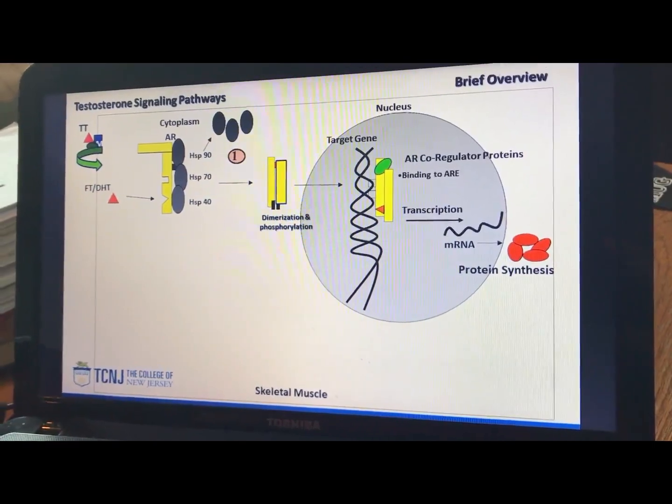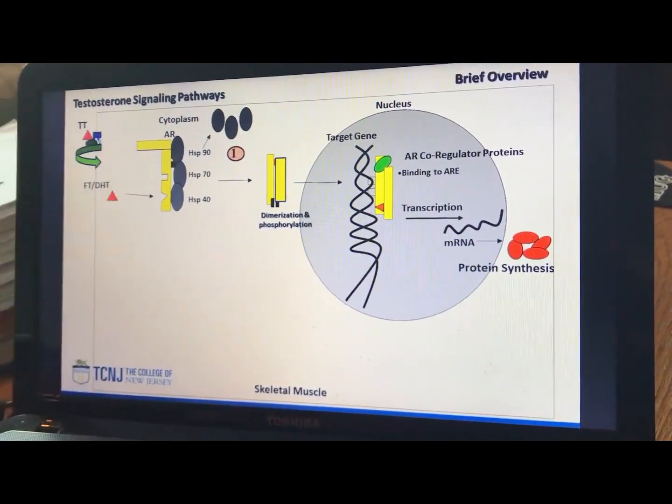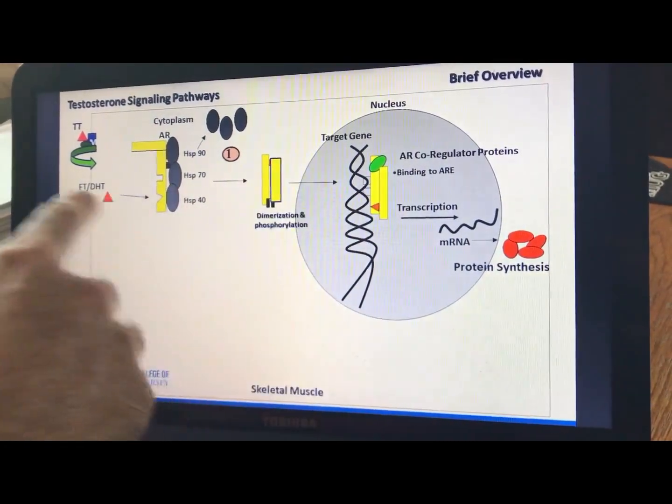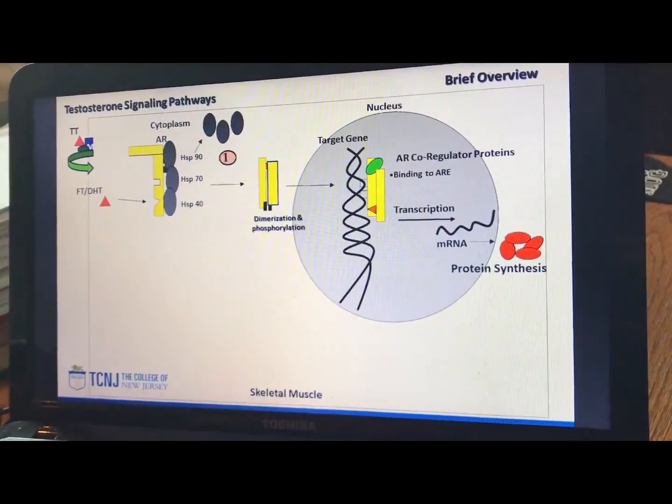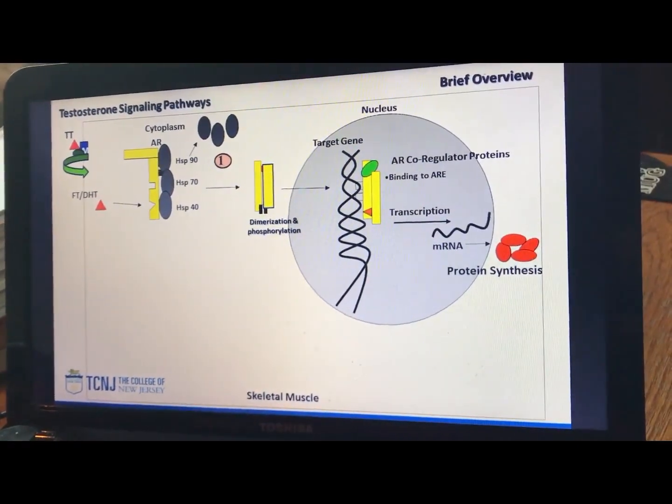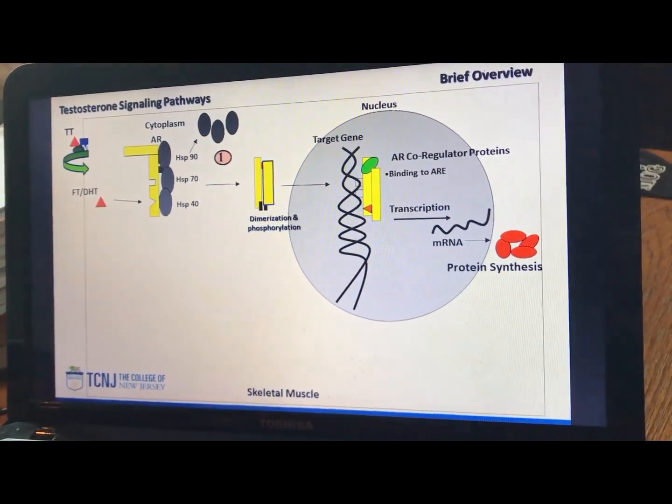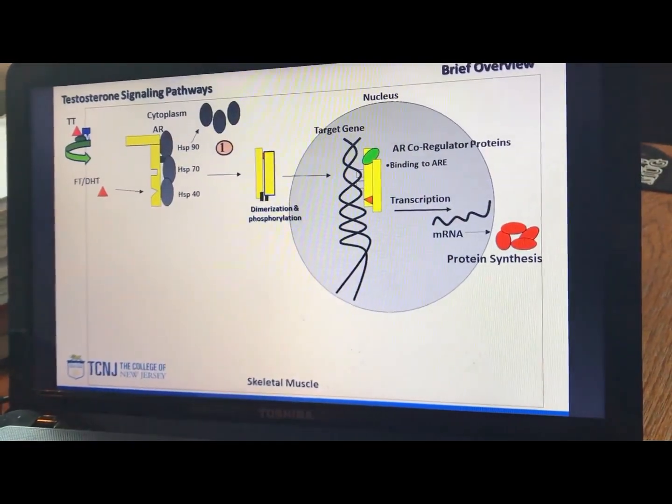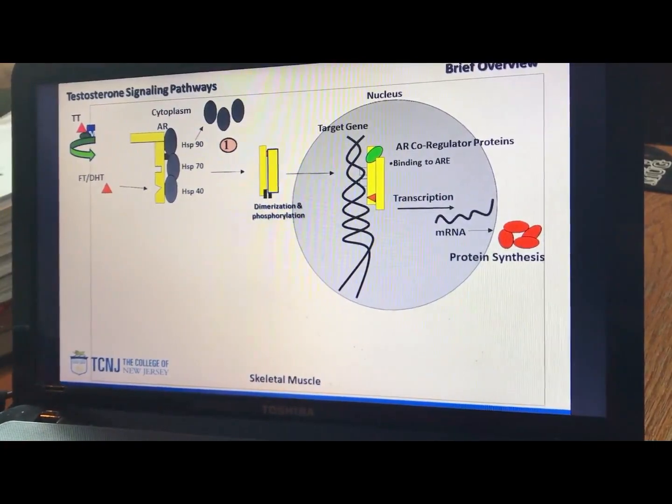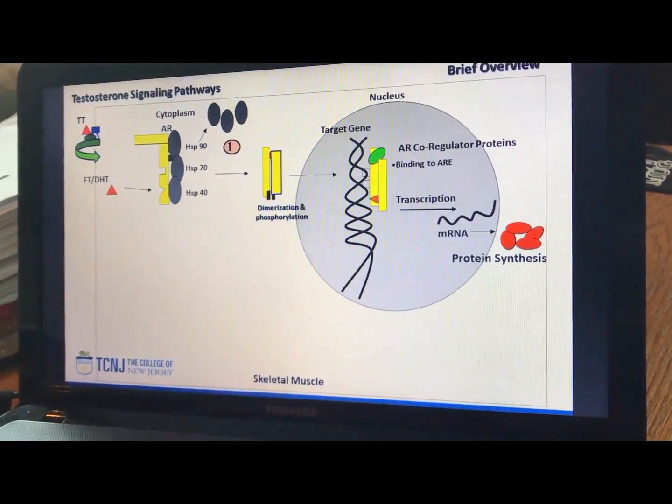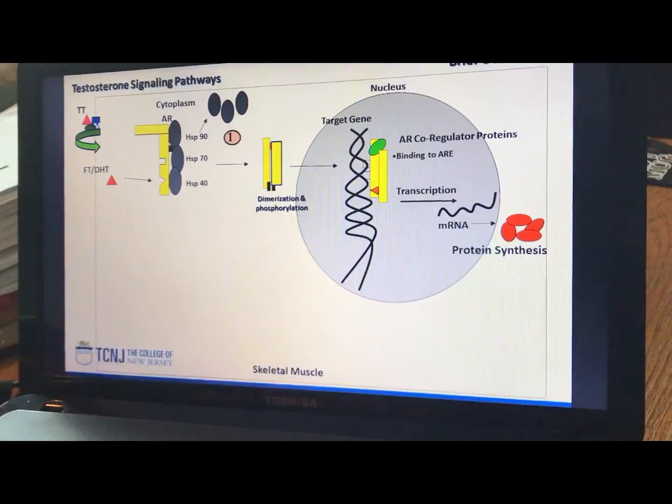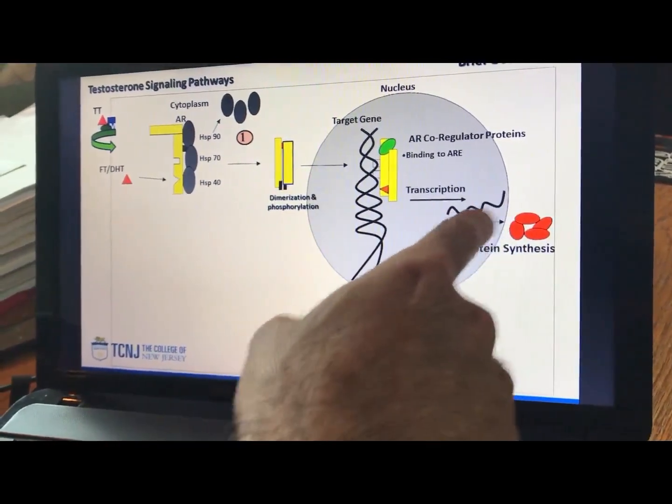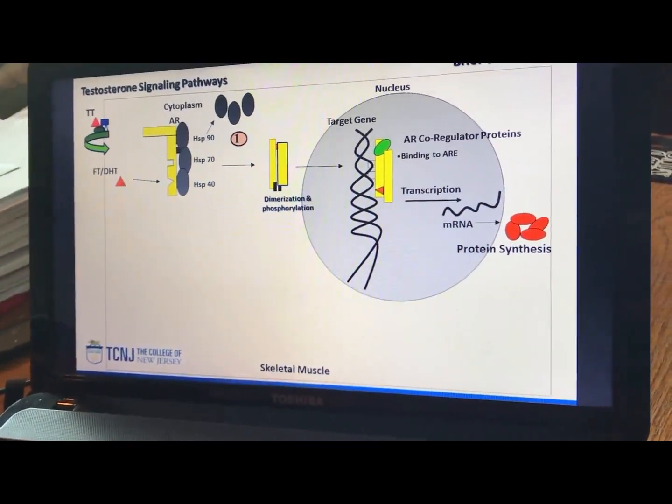Testosterone binds to the androgen receptor. Heat shock proteins dissociate, the whole complex gets transported into the nucleus, binds to androgen response elements on the target gene. These are where the co-regulator proteins come in that can either inhibit or help. More of the co-regulators are actual co-activators. They actually help as opposed to inhibit, right? And then you have your protein synthesis down here. Now, again, your ribosomal biogenesis, which you were just talking about, that's taking place right down here. That's the final spot of the anabolic pathway here, right?